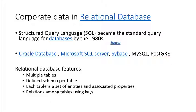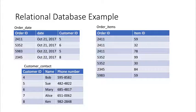Relational databases came out in the 1980s with SQL and a bunch of commercial products to support them. The key feature is a bunch of tables where each table has rows representing entities and columns representing properties. As a quick example, we might have customer data with order IDs, when an item was placed, which customer placed it, and information about what was in the order.